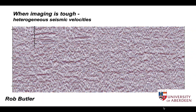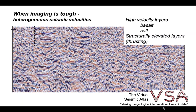Getting good seismic images of the subsurface can be really tough at times, particularly when the layers in the subsurface have alternating seismic velocities or those seismic velocities vary through a profile. Rocks that have particularly high velocities compared to most sedimentary successions include basalts — lavas and sills — and evaporites like halite. The velocity structure can also be complicated by the repetition of originally deep material into the shallow section through structural processes like thrusting.